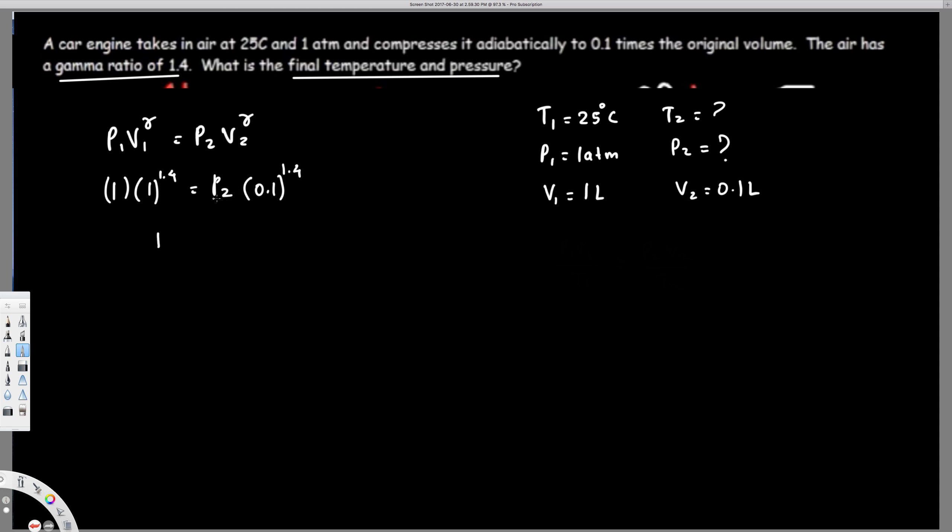Then to find P2, we divide by this value: 1/(0.1^1.4) = P2. If you plug this into a calculator, you will get 25.1 atm. So this is one of our answers, the final pressure.